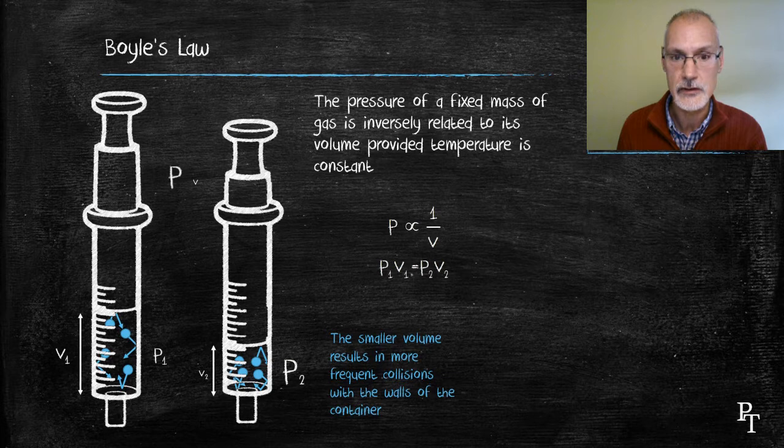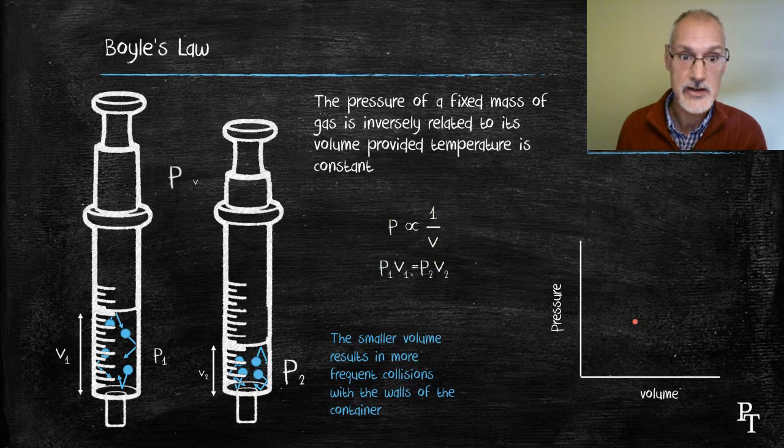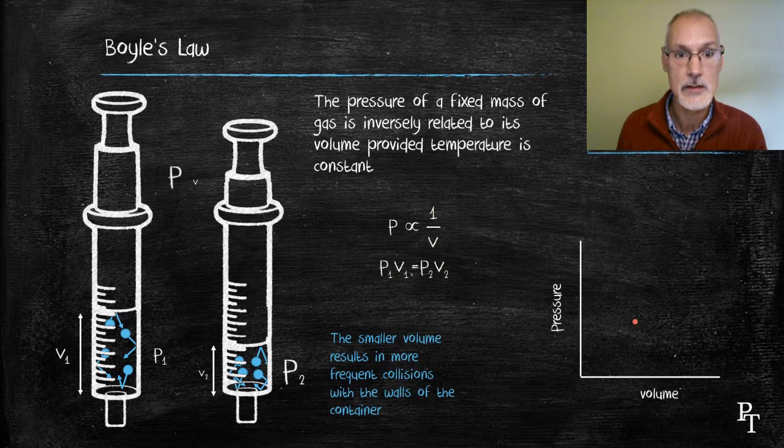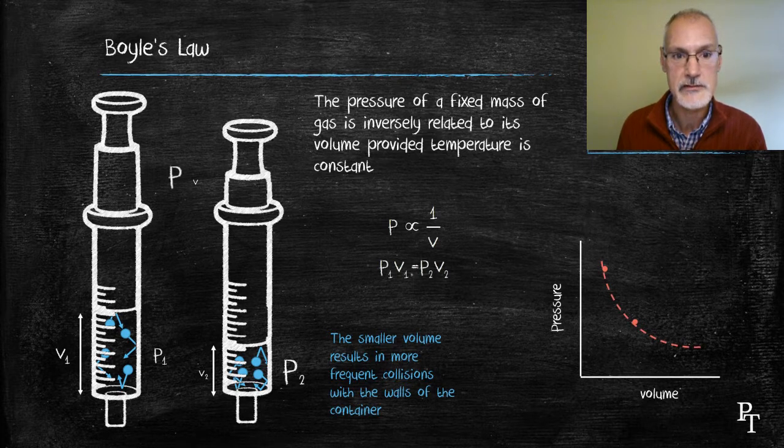Graphically, it would take this look. So here I've plotted my initial point, my initial pressure, and my initial volume. In the animation I have here, I reduced the volume, cutting it in half. That would then result in the pressure doubling. Connecting these points with a smooth curve, we would get the following graph. This is typical of what we call an inverse relationship.